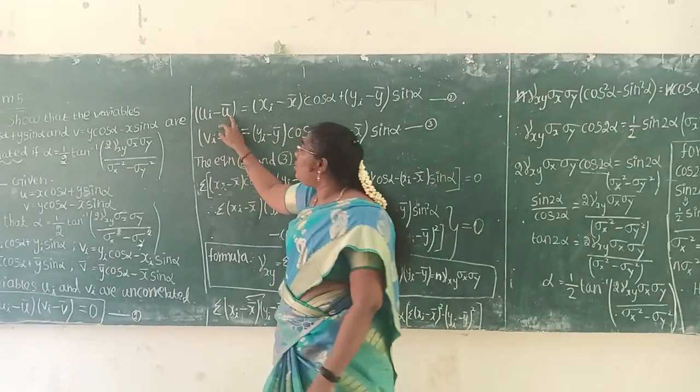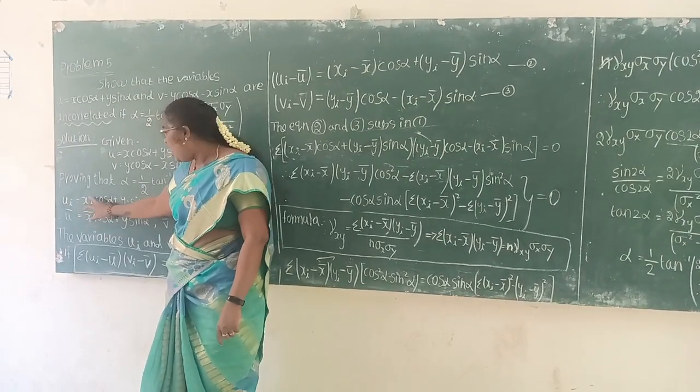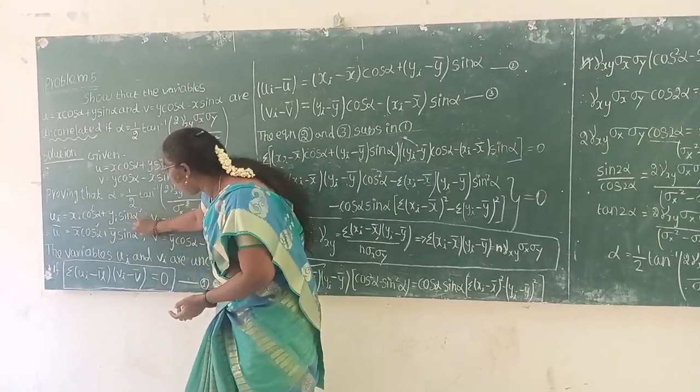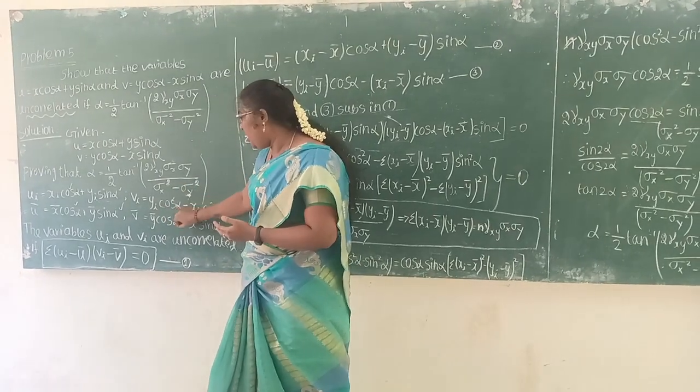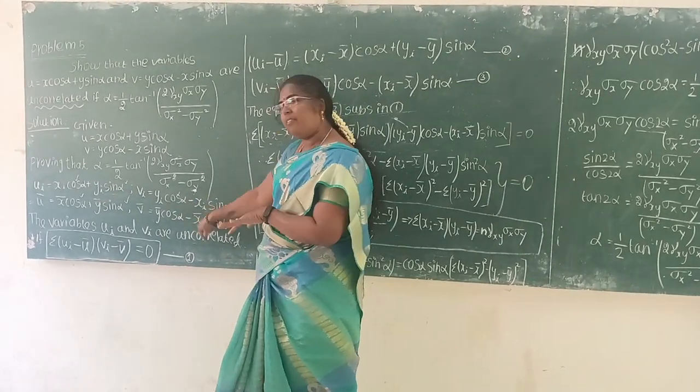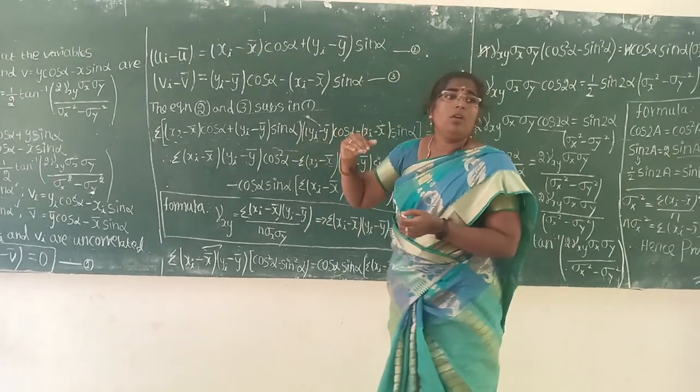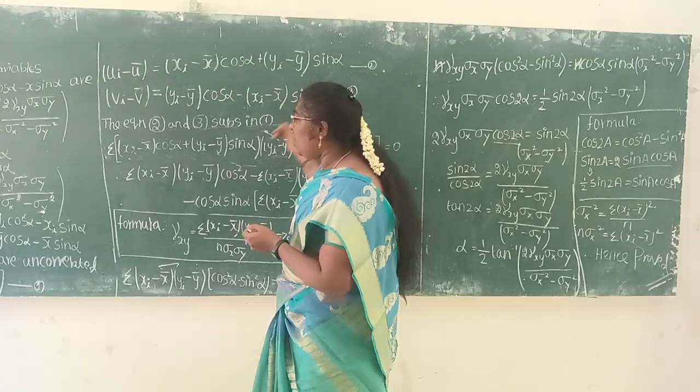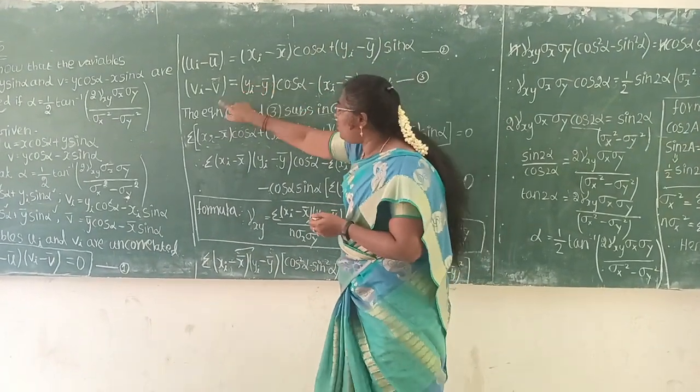This is equation number 1. Next, you have to find ui minus u bar and vi minus v bar. Then ui minus u bar equals xi minus x bar. If you have xi minus x bar cos alpha, then xi minus x bar cos alpha. If you have sin alpha, then yi minus y bar sin alpha. If you have done vi minus v bar, then yi minus y bar cos alpha minus xi minus x bar sin alpha.